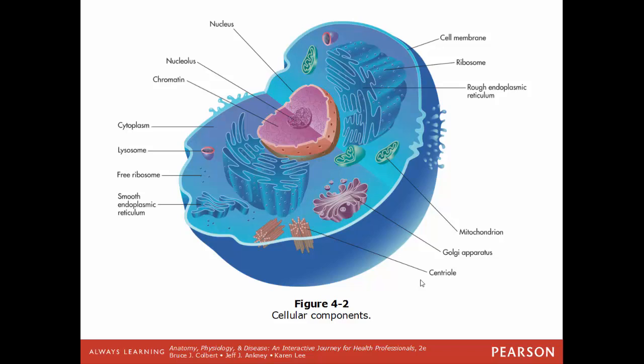Here is a generic composite image of a cell cut open to show the organelles. You can see the nucleus, the control center, the cytoplasm as the jelly-like substance the organelles sit in, and individual structures including mitochondria, the rough ER, smooth ER, lysosomes, and ribosomes — all examples of organelles.